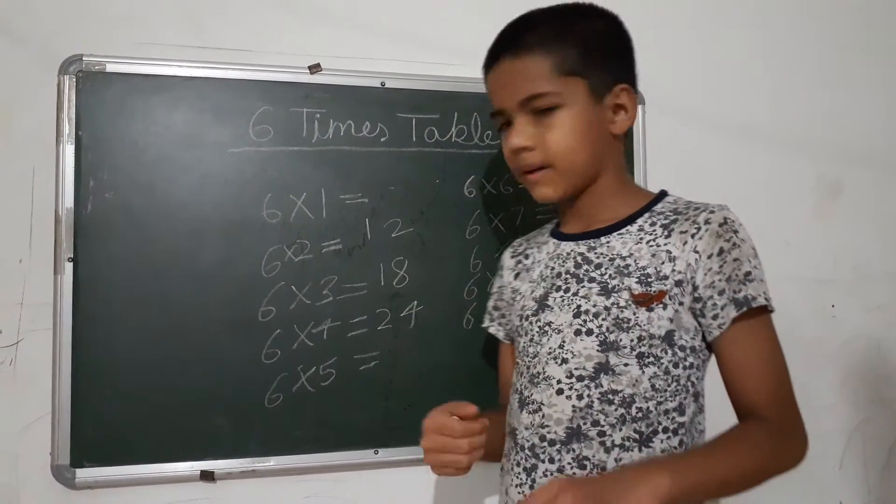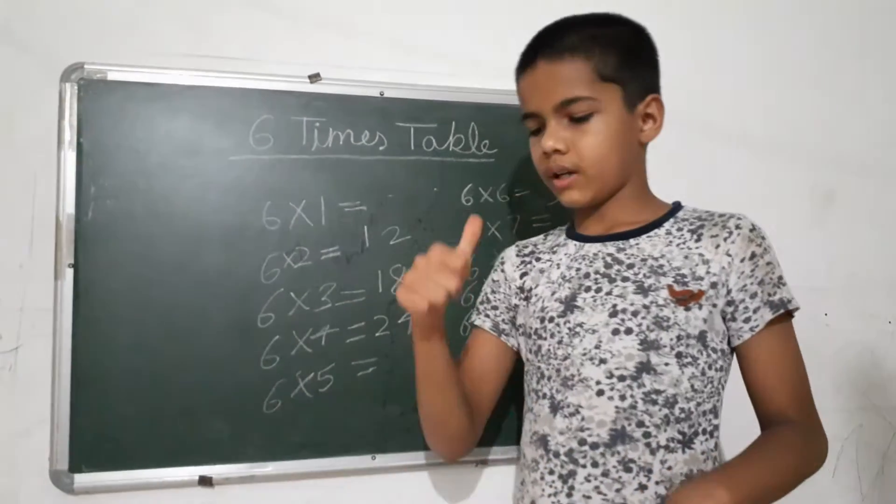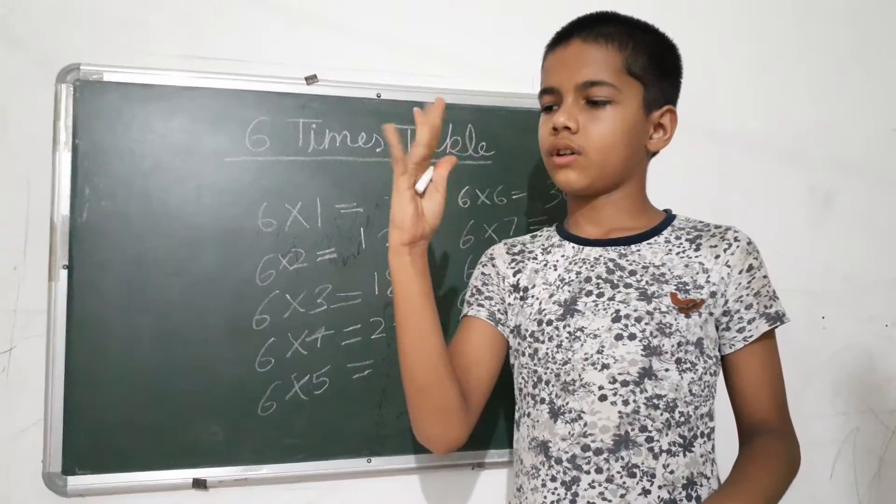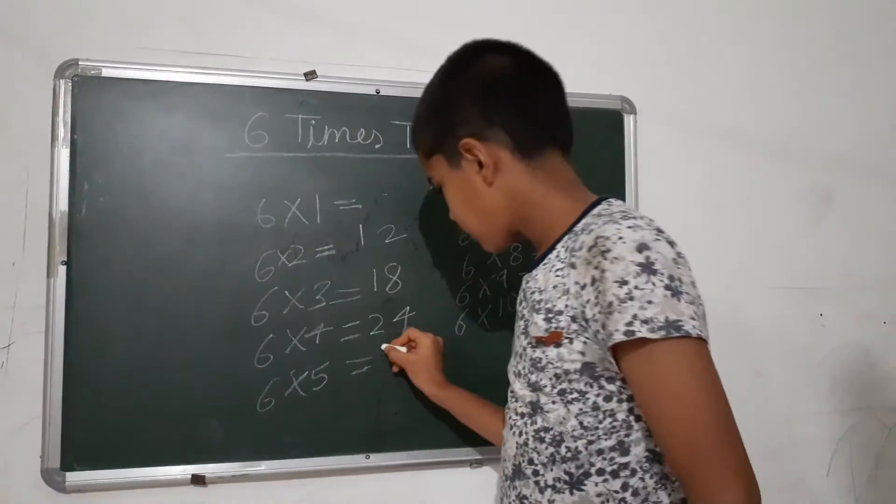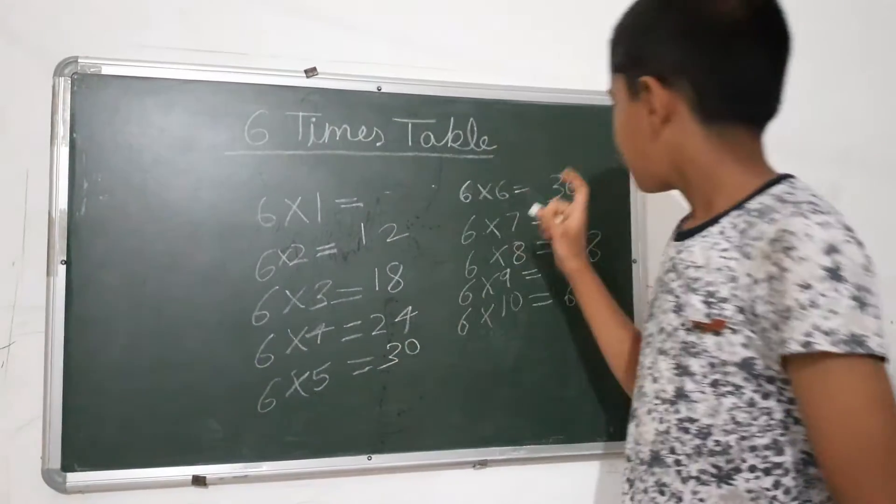24 plus 6, 25, 26, 27, 28, 29, 30. Our answer is 30.